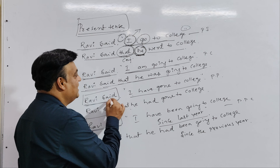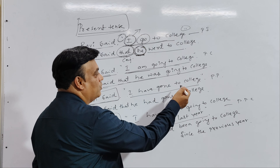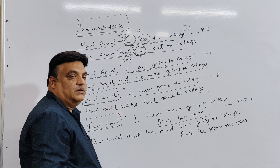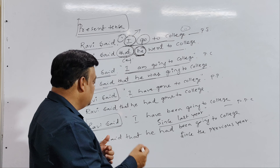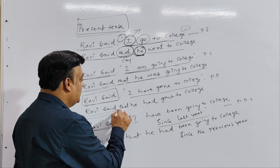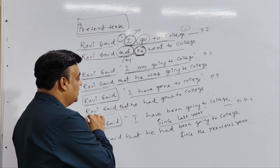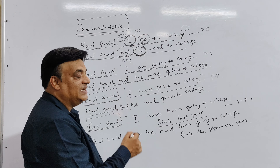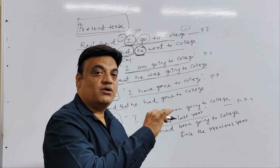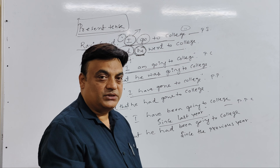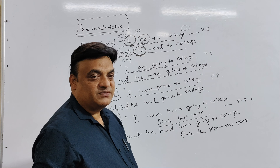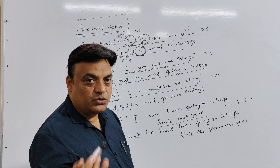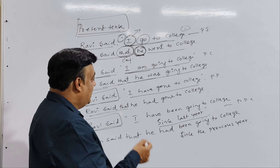Ravi said, 'I have gone to college.' This present perfect changes to past perfect: Ravi said that he had gone to college. Present perfect changes to past perfect — 'have/has gone' becomes 'had gone'.